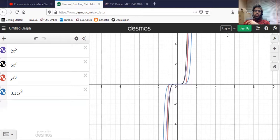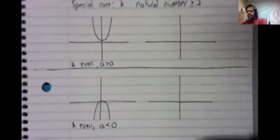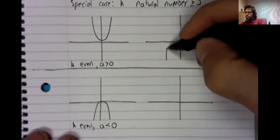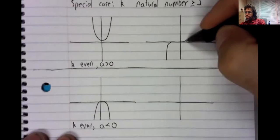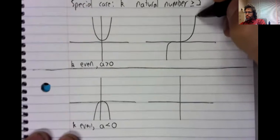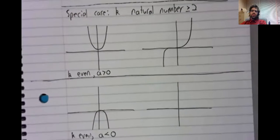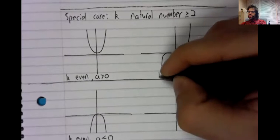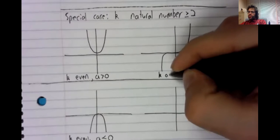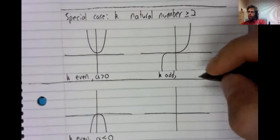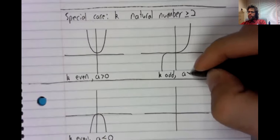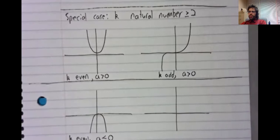And of course, it varies in the fine detail. But the graphs all looked basically like this. This is the k-odd, a is positive case.